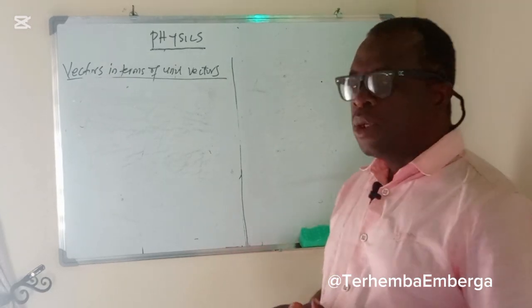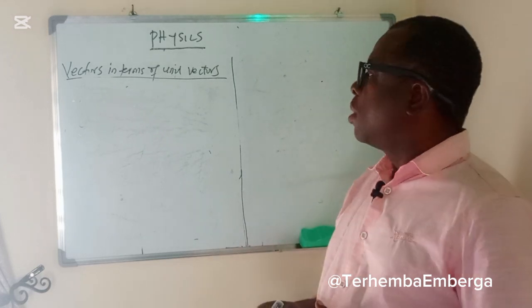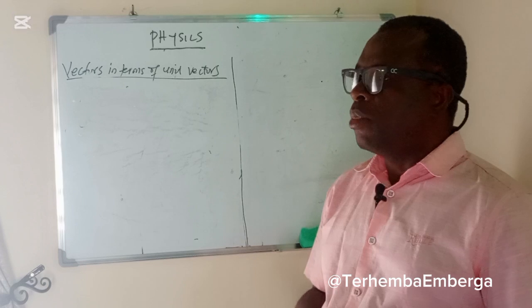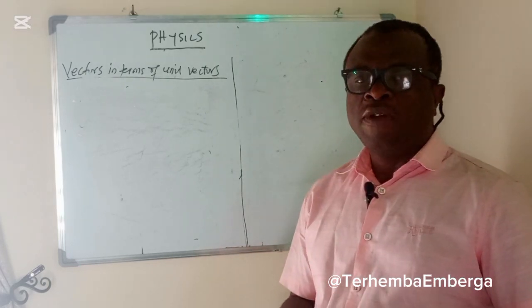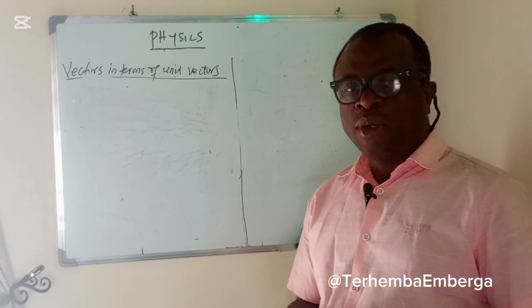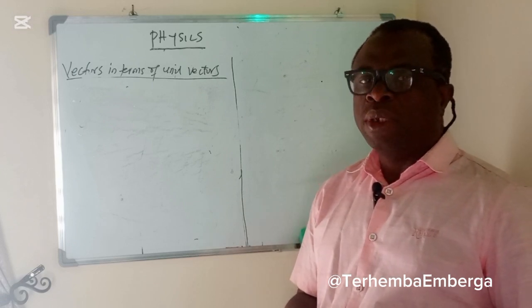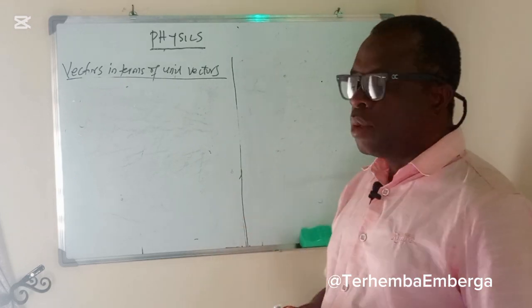Vectors can be added as vector addition, they can be subtracted, vector subtraction, and they can be multiplied. Our multiplication is of two types: the dot products and the cross products, which we'll be discussing in this topic.